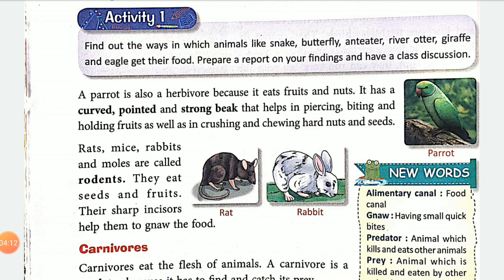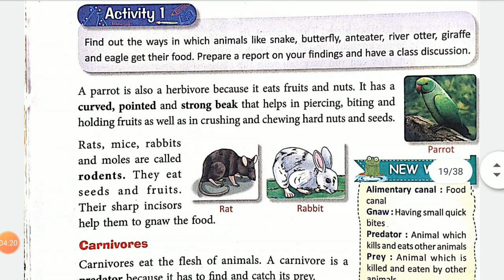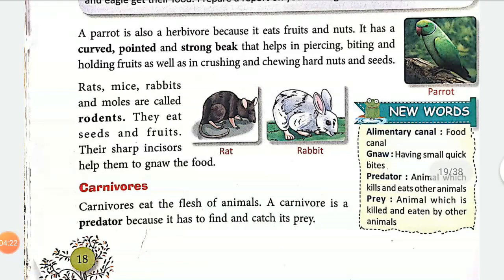Rat, mice, rabbit, and moles are called rodents. They are rodents which eat seeds and fruits. Their strong teeth help them gnaw and keep their food.